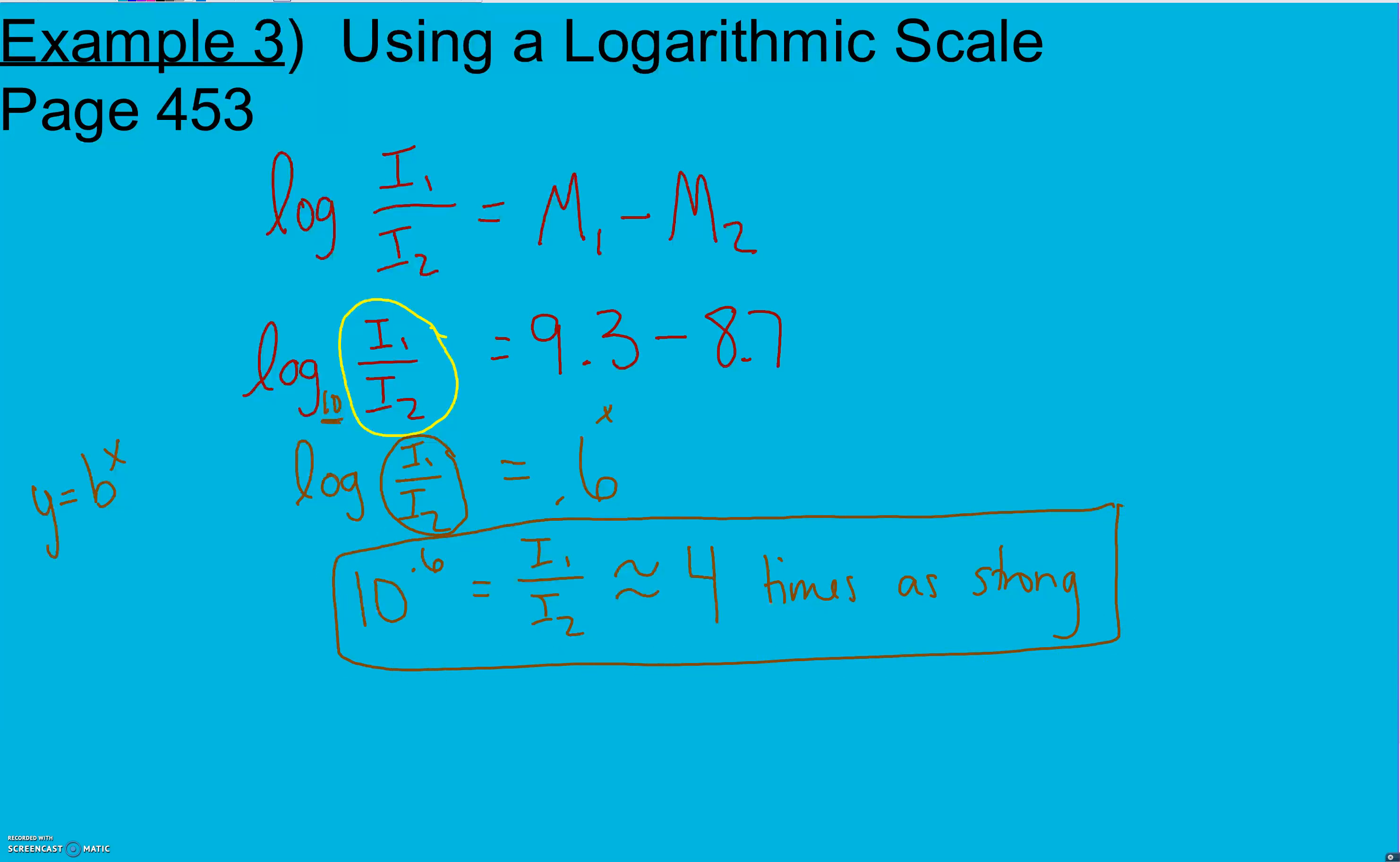Again, we don't need to find an individual I value, I1 and I2. We just want that ratio. What is that ratio? And it tells us it was about 4 times as strong.